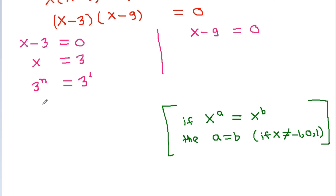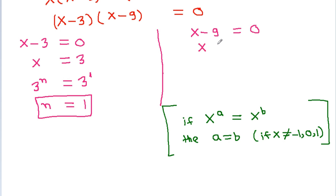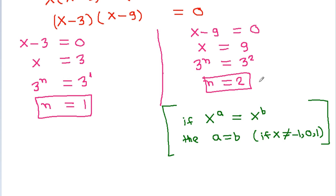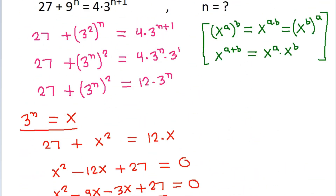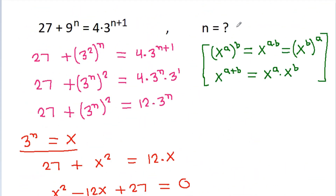So n equals 1. From the second case, x equals 9, and since x is 3 power n, we get 3 power n equals 9 equals 3 power 2, so n equals 2. Therefore n equals 1 and n equals 2.